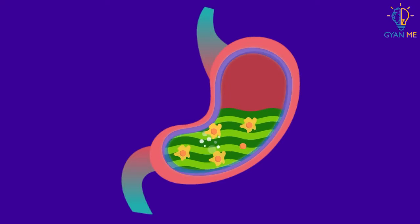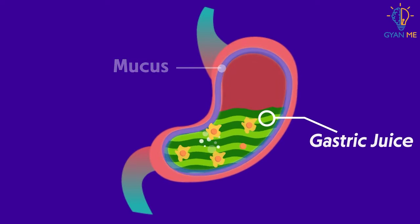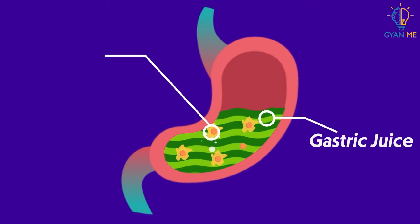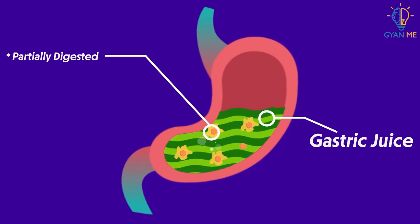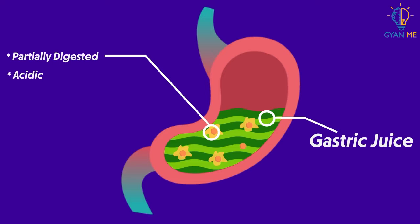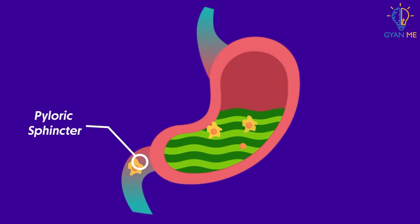Gastric glands also release mucus which protects the stomach wall from acid. The partially digested food material in the stomach, called chyme, passes through the pylorus part of the stomach into the small intestine. This passing of food is regulated by the pyloric sphincter.